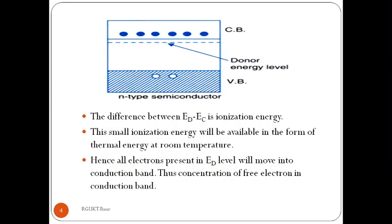The gap between ED and EC is the ionization energy. This small ionization energy is available as thermal energy at room temperature. Hence, all electrons present in the donor energy level will move into the conduction band, increasing the concentration of free electrons in the conduction band.